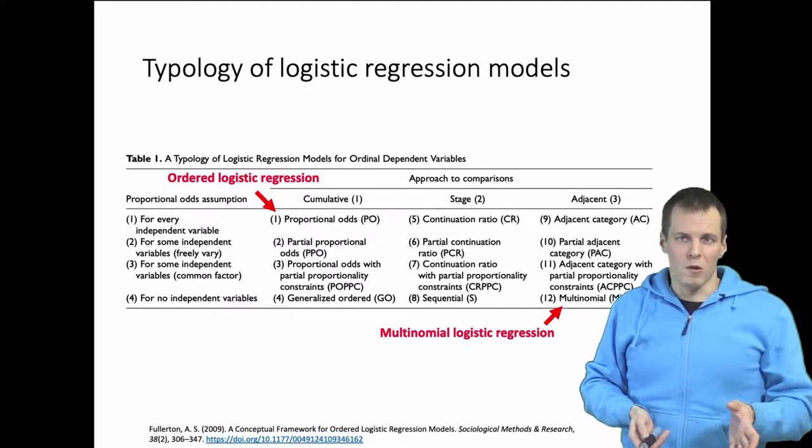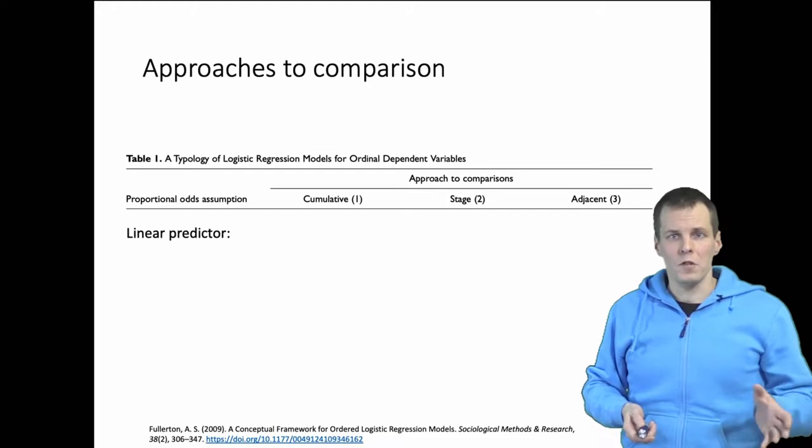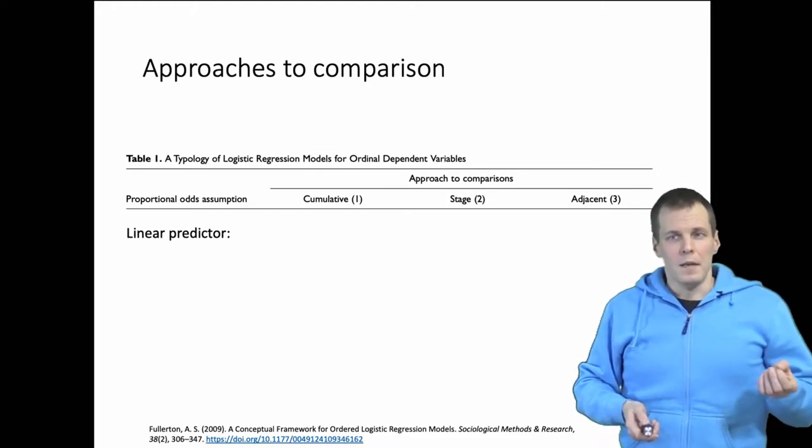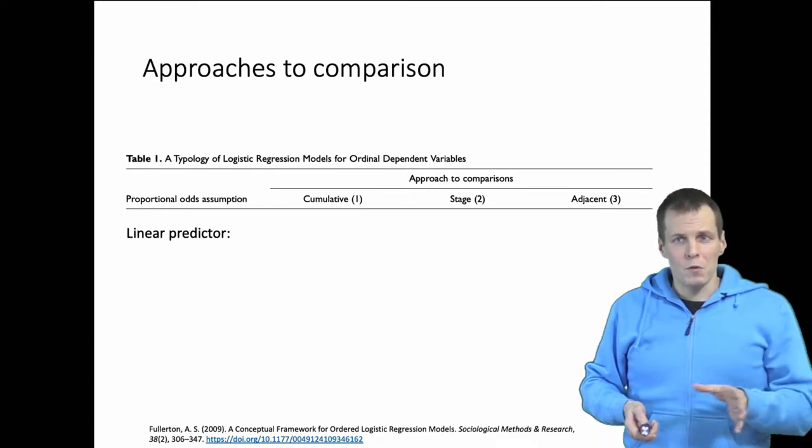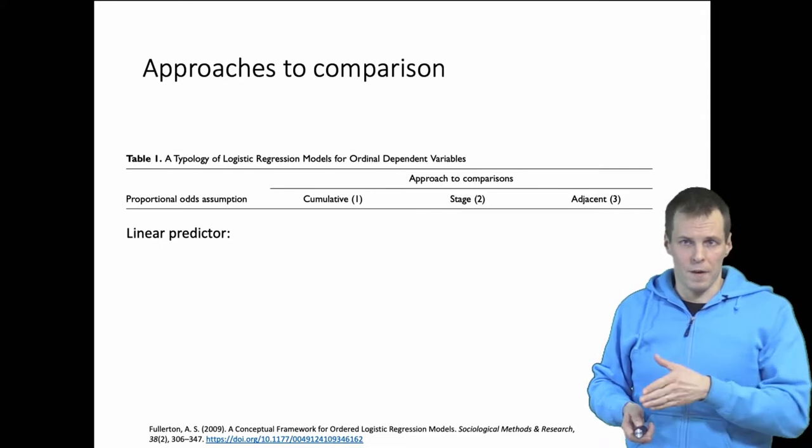Instead of memorizing all these models and what they do, let's take a look at the dimensions. The first dimension is the approach to comparison, and the idea of approach to comparison is that we are predicting a slightly different thing in these different models.